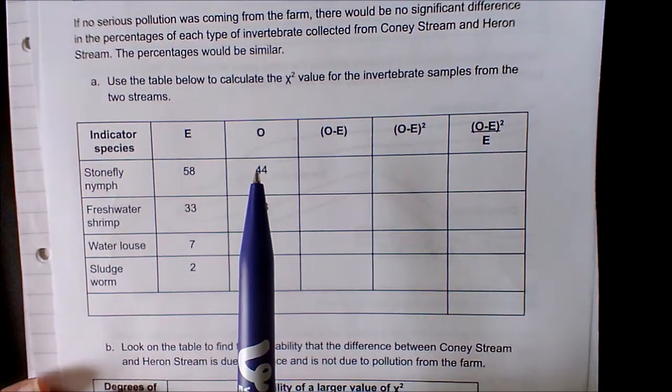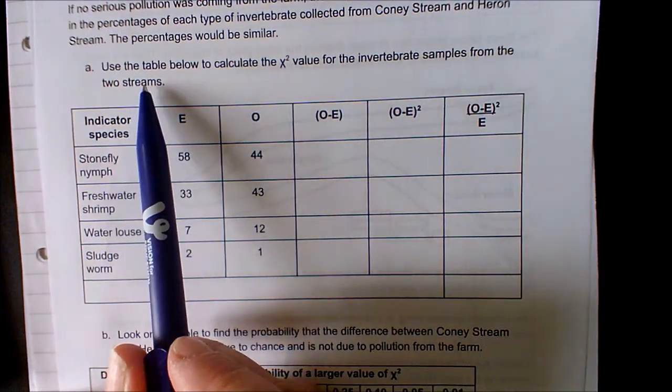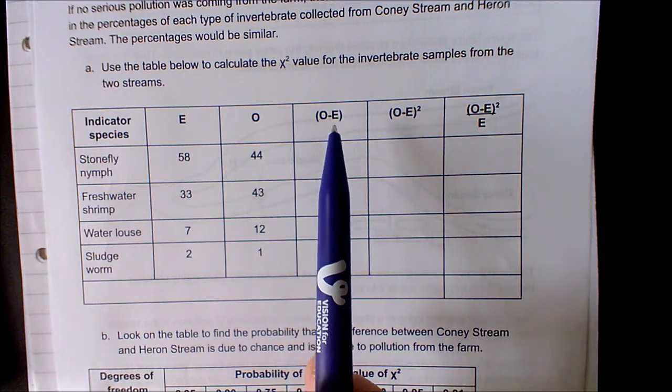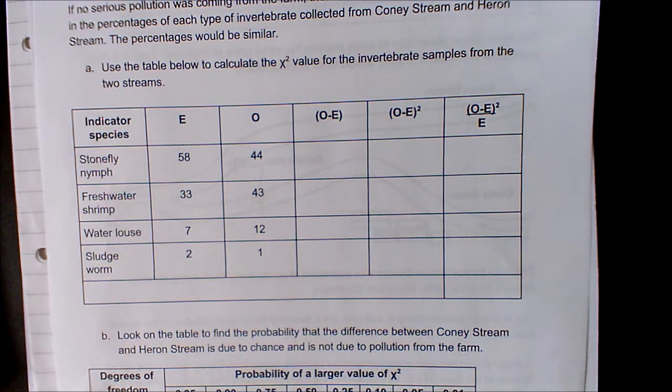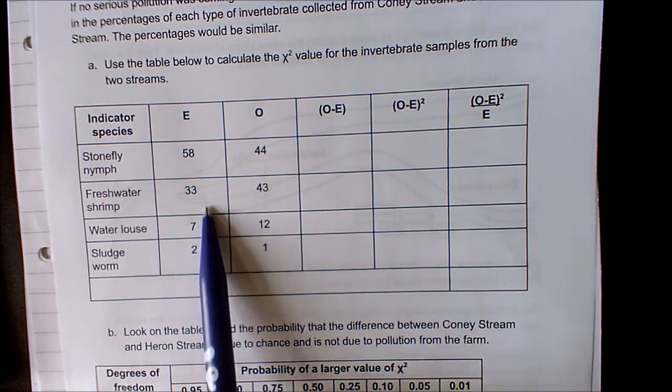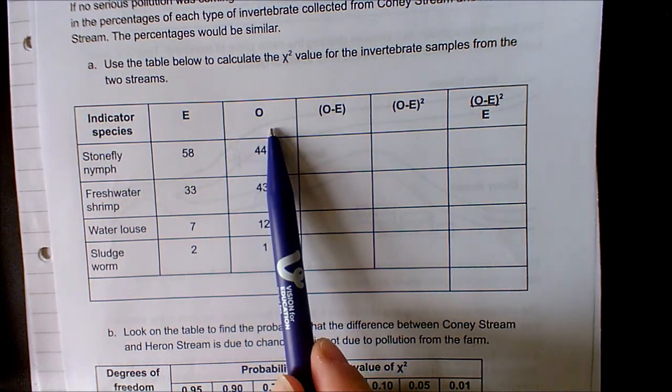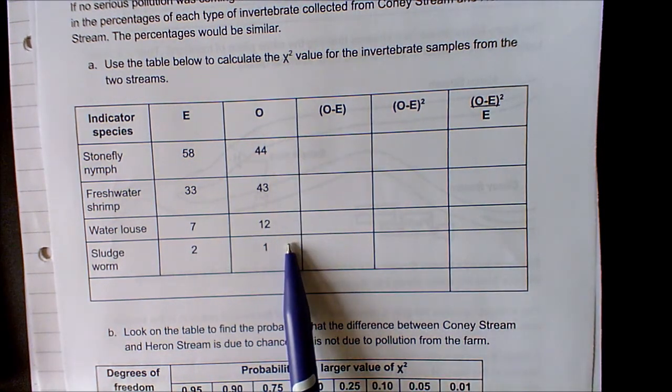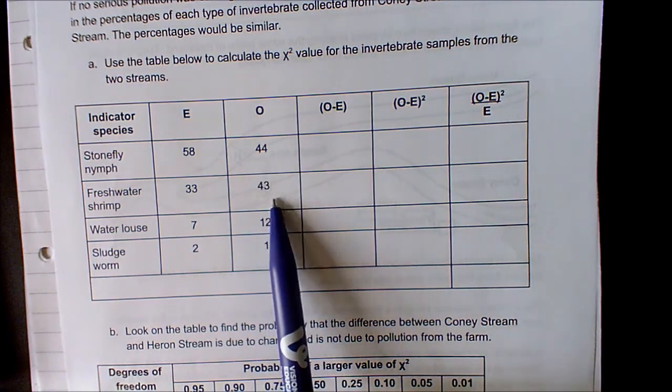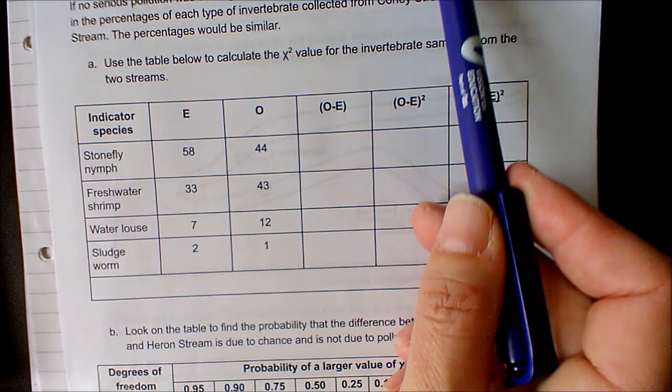Now it says use the table below to calculate the chi-squared value for the invertebrate samples from the two streams. They've given us the table already with our expected values and our observed values. Our observed values are the ones that we have seen.